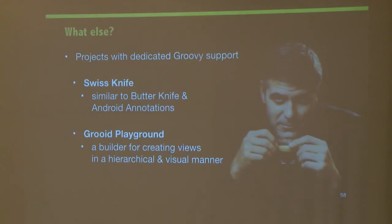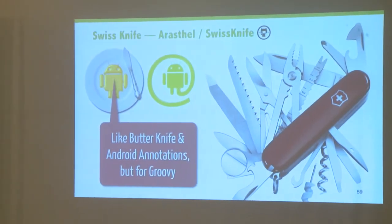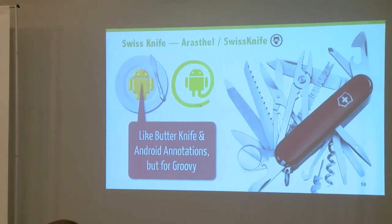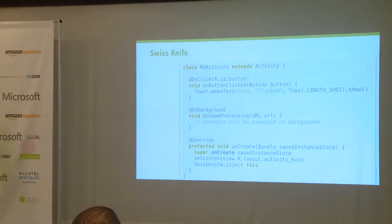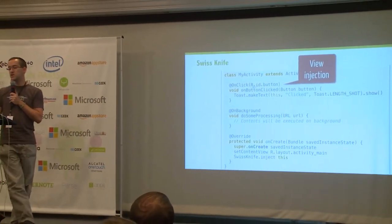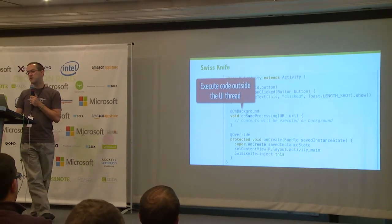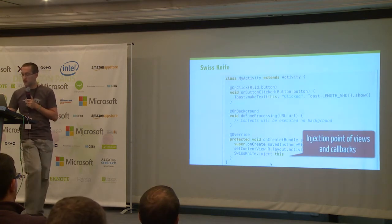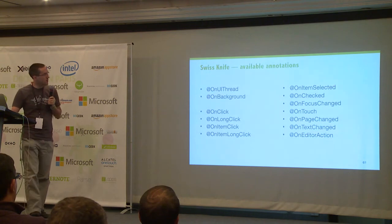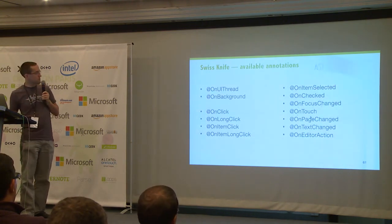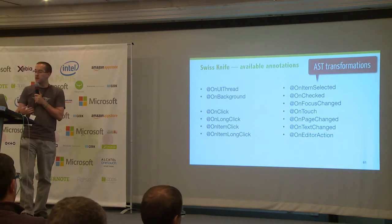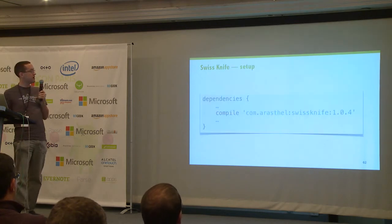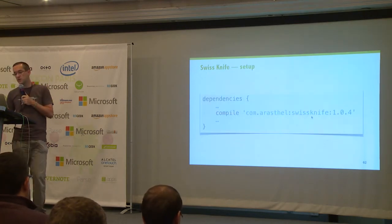Beyond Groovy, there's some initial work on new projects, like SwissKnife — available on GitHub. It's a bit like ButterKnife and Android Annotations, but for Groovy. You get the same kind of stuff: injecting views, onBackground and onUIThread annotations to declare that you want to execute on a different thread or the right thread. It's built as an AST transformation rather than APT. You just need to add that dependency in your project. This is more experimental and not yet available on Maven Central.